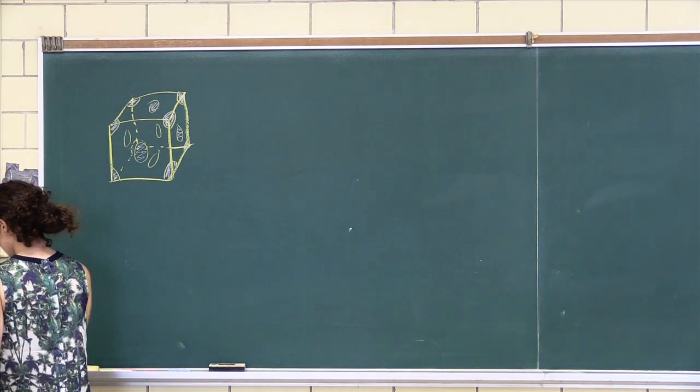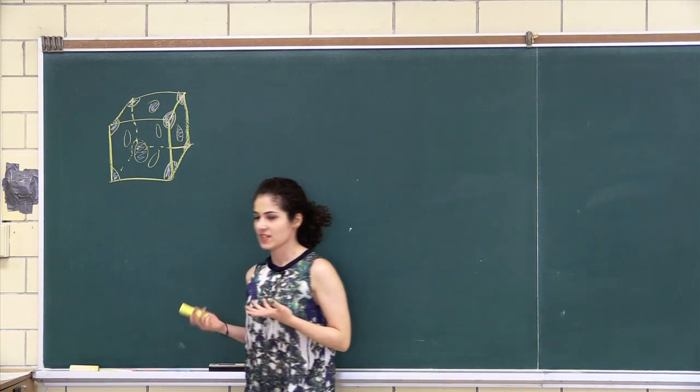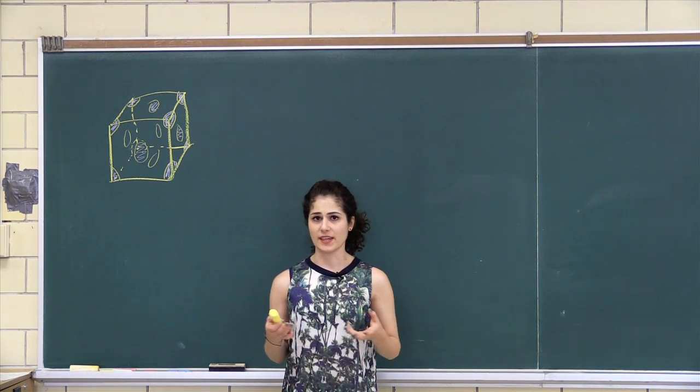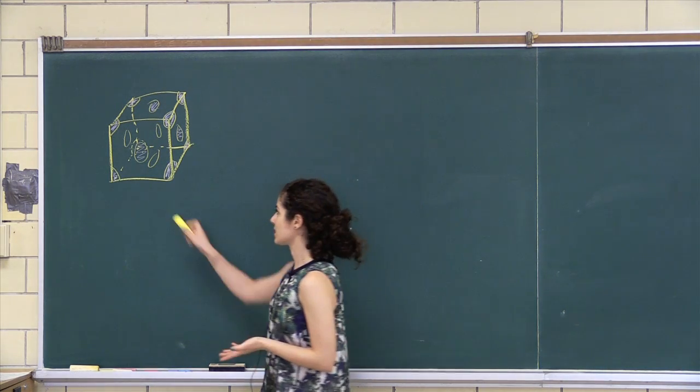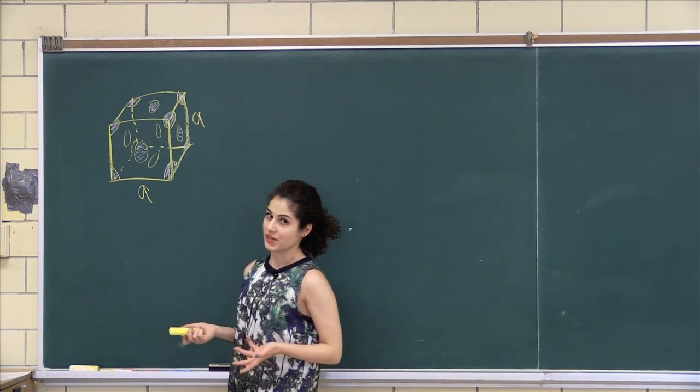That's what an FCC looks like. So to demonstrate the atomic packing factor, you want to relate the A, which is the side length, I'll just write that there, to the R ratio.